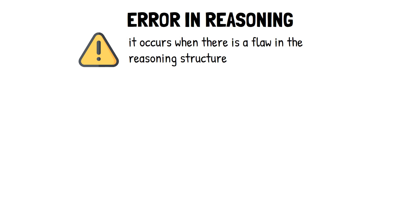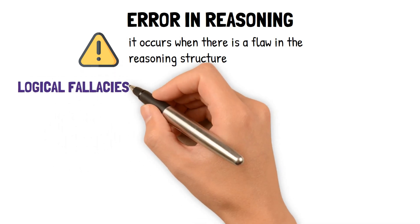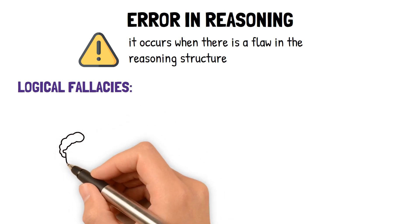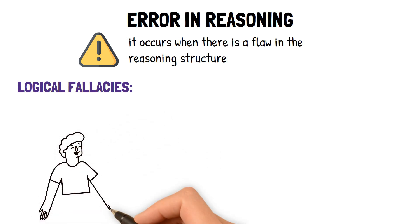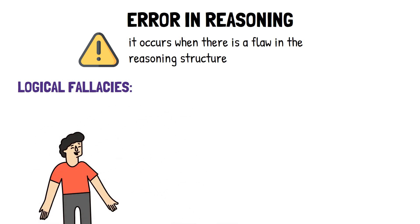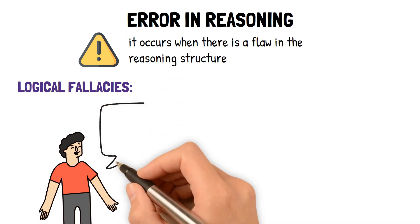Some common types of errors in reasoning include logical fallacies. These are mistakes in reasoning that can be intentional or unintentional, and they often occur when a person tries to persuade others to accept their arguments.